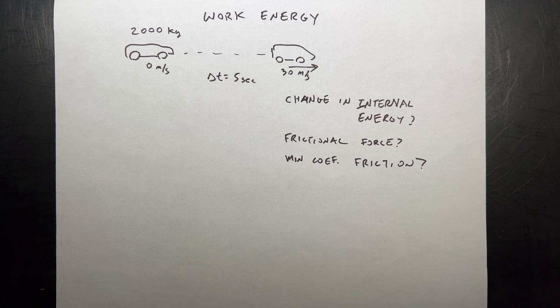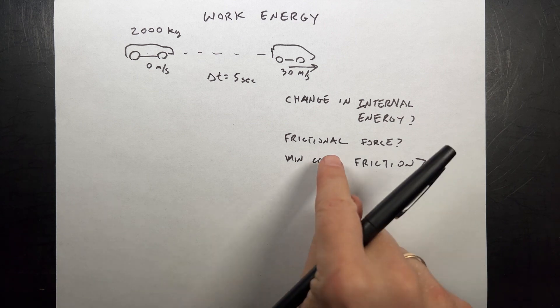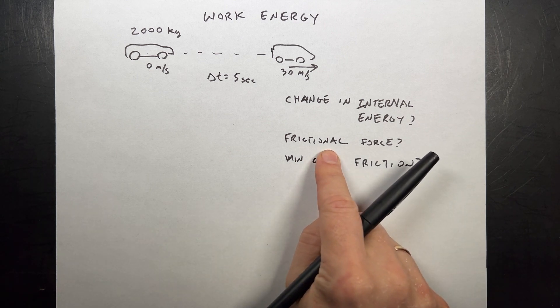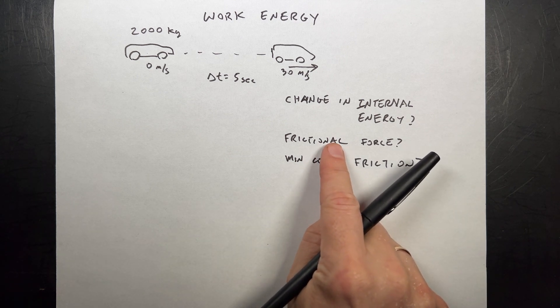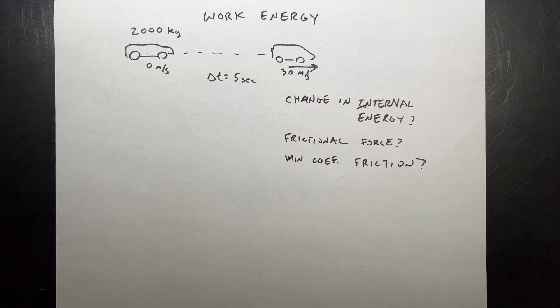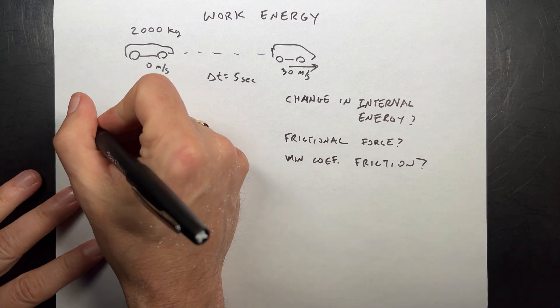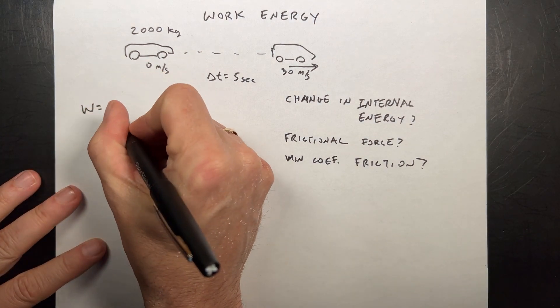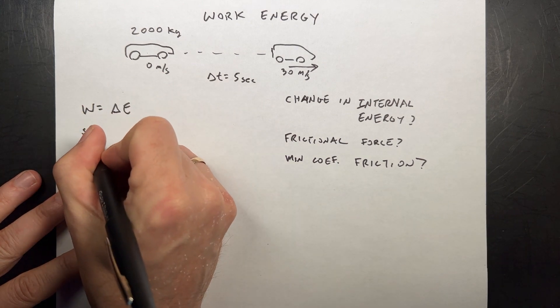And I want to do this as a work energy problem. You could just say I want to find the final kinetic energy and that wouldn't be too bad. But let's do this as a work energy problem. I'm actually going to find this first. Let's find the frictional force in the car. So to do that, I need to use work energy. This says that the work is equal to the change in energy. But we have to pick a system.